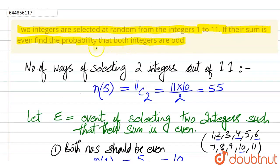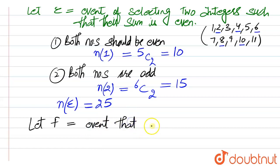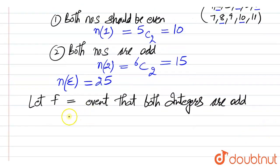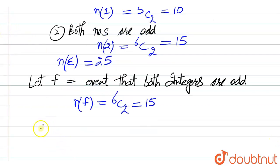Now we have to find the probability that both integers are odd. Let us define another event F, which is the event that both integers are odd. Event F contains elements equal to 6C2 (choosing any two from 6 odd numbers), which is 15 — just as in the second case. So the number of elements in F intersection E is clearly 6C2, that is equal to 15.